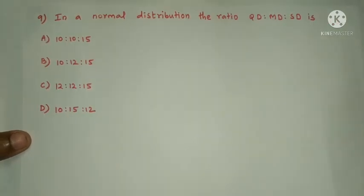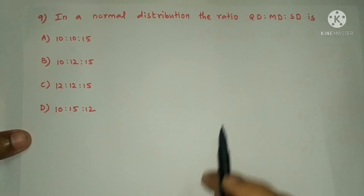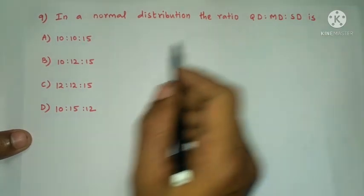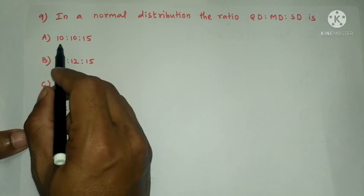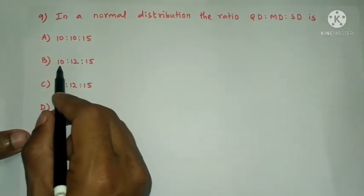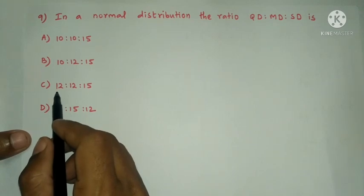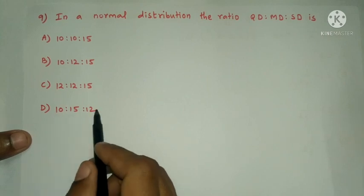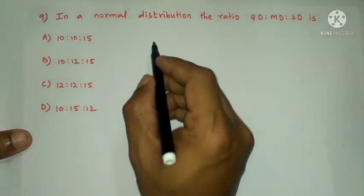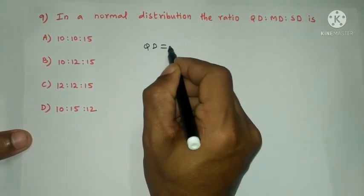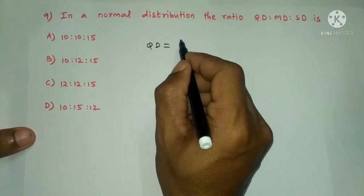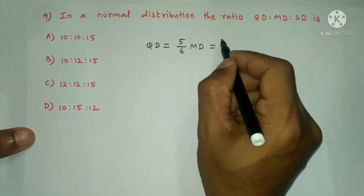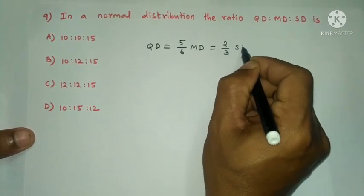Next question: in a normal distribution, the ratio of quartile deviation to mean deviation to standard deviation is — Option A: 10:10:15. Option B: 10:12:15. Option C: 12:12:15. Option D: 10:15:12. Now, QD = (5/6) × mean deviation = (2/3) × standard deviation.